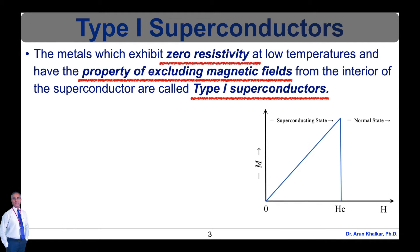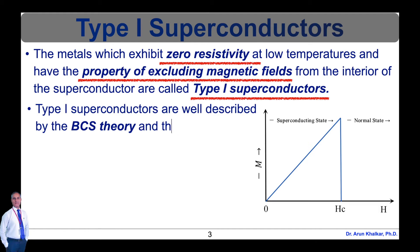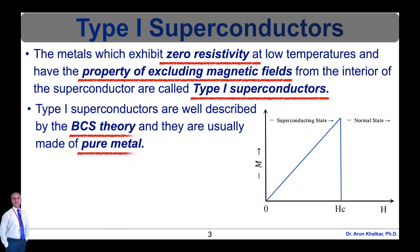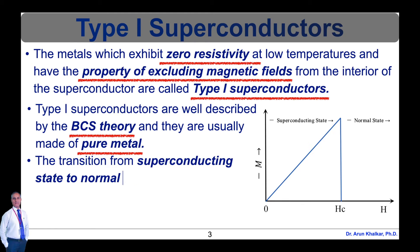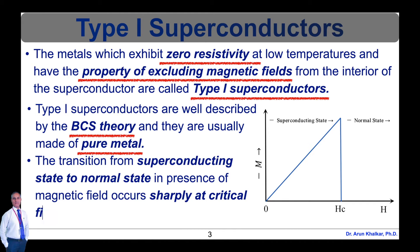The superconductivity exists only below their critical temperatures and below a critical magnetic field strength. Type 1 superconductors are well described by the BCS theory. These are usually made up of pure metal. When cooled below its critical temperature it exhibits zero resistivity and displays perfect diamagnetism, meaning that magnetic fields cannot penetrate it while it is in the superconducting state.